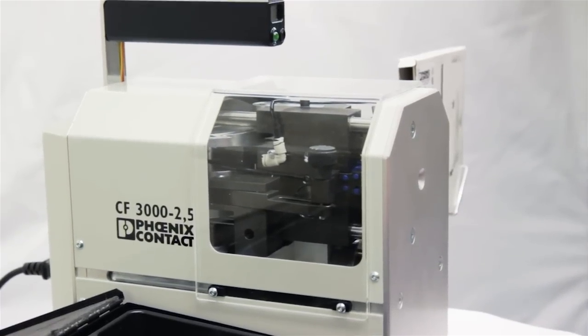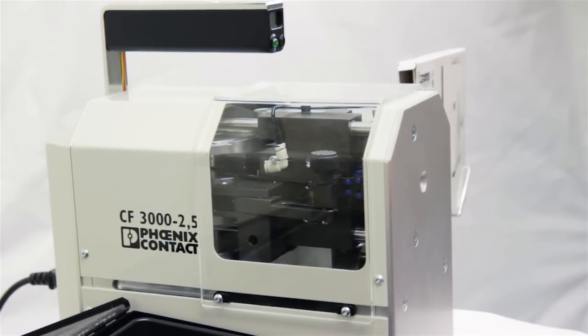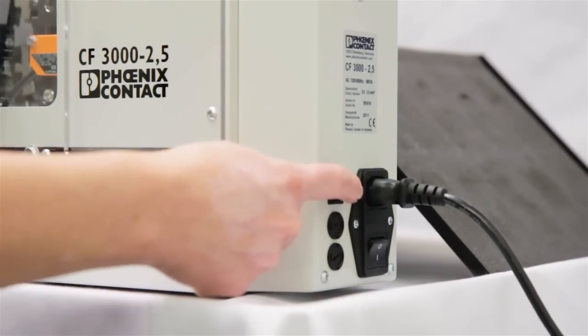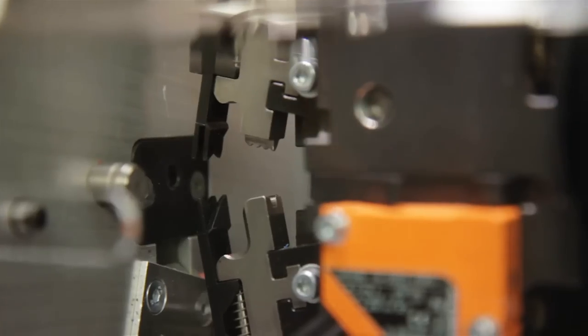If this happens, make sure the clear protective cover is closed. Find the release button on the back of the unit and press it so that the crimp die and forks open to release the wire if needed.